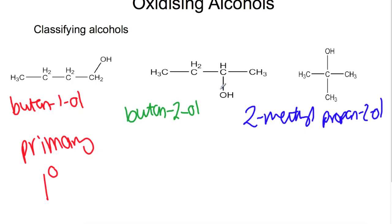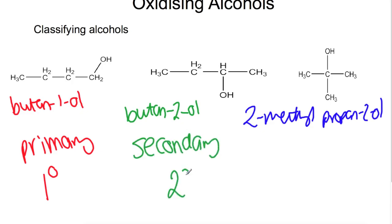For our middle alcohol here, our oxygen is attached to a carbon in the middle of a chain, so it's got two carbons attached to it. This makes it a secondary alcohol. And then our final alcohol here is attached to a carbon which has branches, meaning that it's got three carbons attached to it and no hydrogens at all. This makes it a tertiary alcohol.